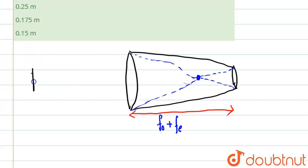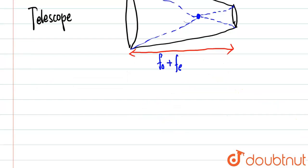So basically what we can see is that the distance between the lenses is given as focal length of objective plus focal length of eyepiece.